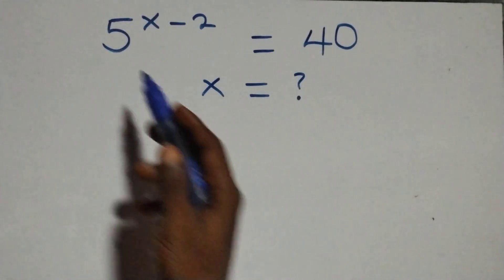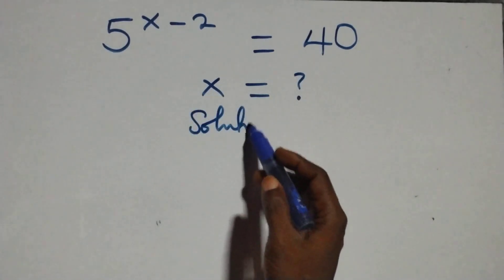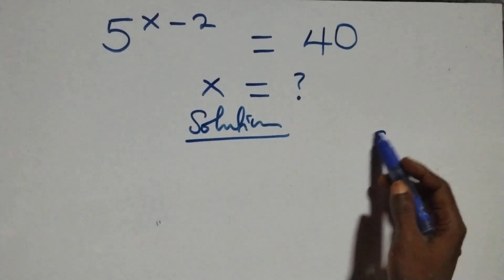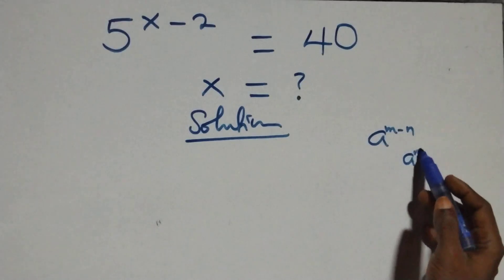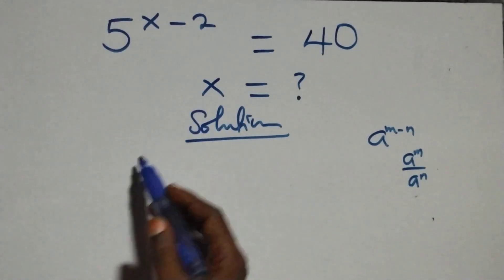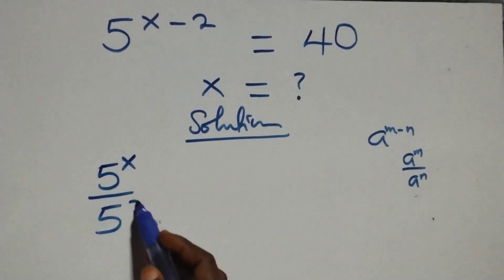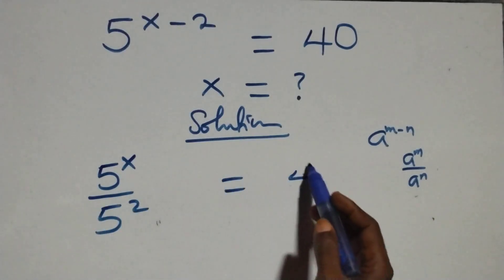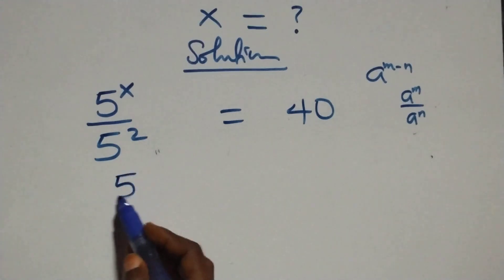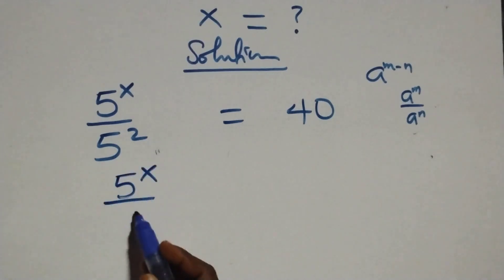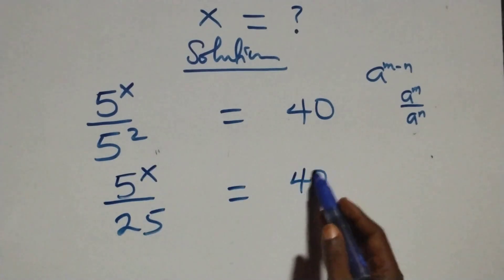Hello, you are welcome. Here is how to solve this nice exponential equation. We have a raised to power n minus n, which is the same as a raised to power n over a raised to power n. So we have five raised to power x over five squared equals forty. We can write five squared as five times five, that is twenty-five, so five raised to power x over twenty-five equals forty over one.